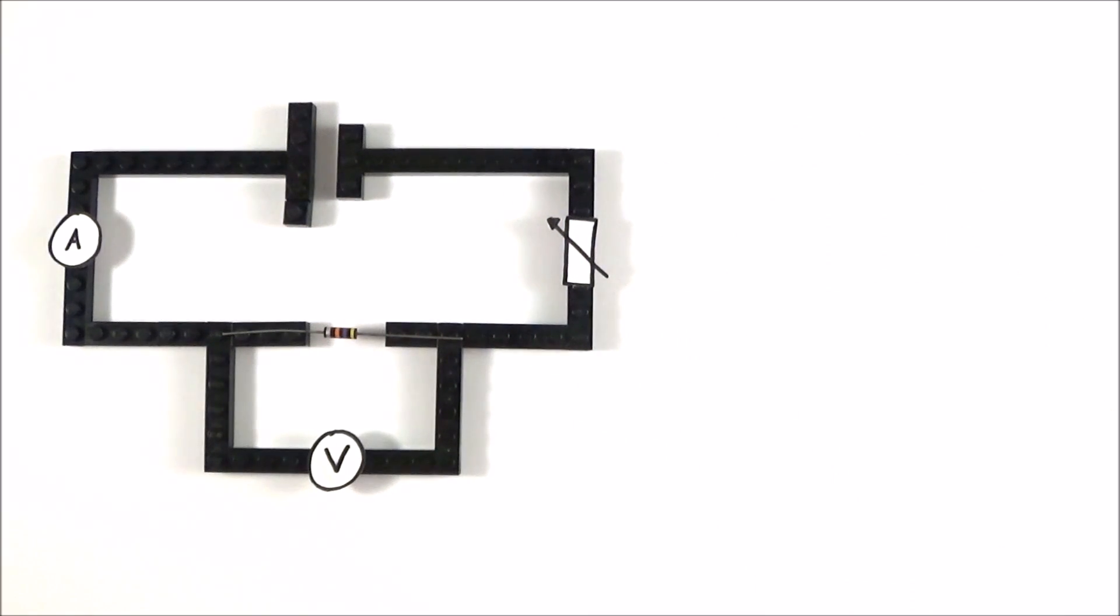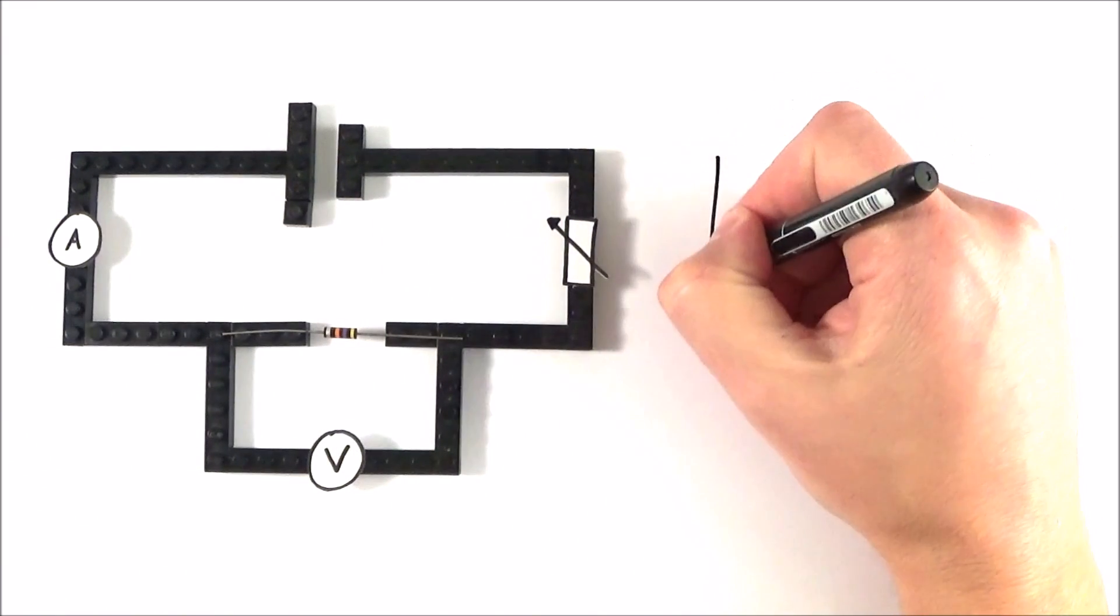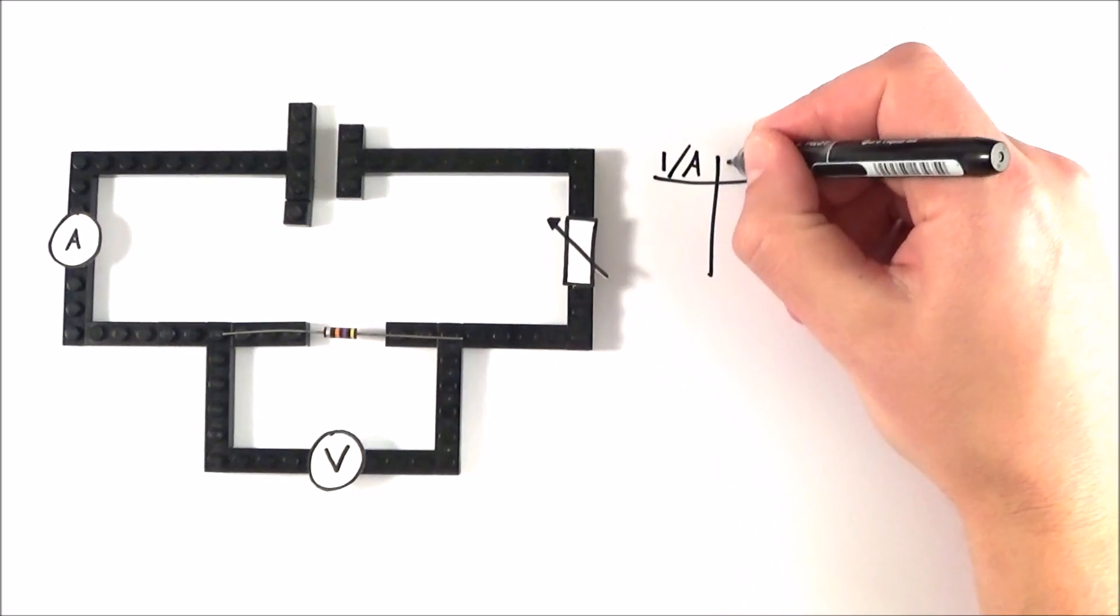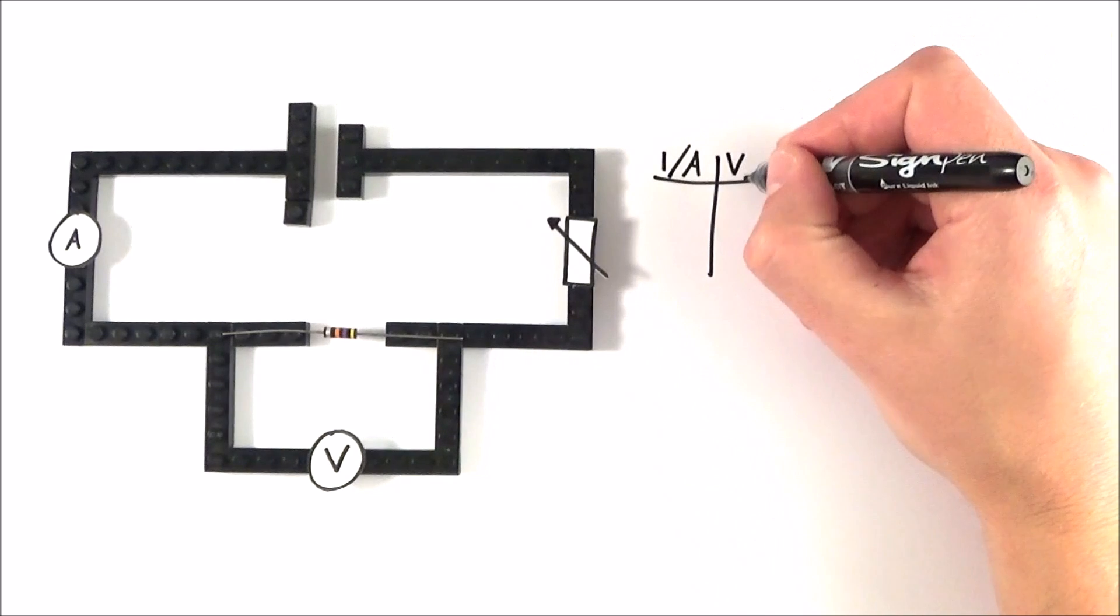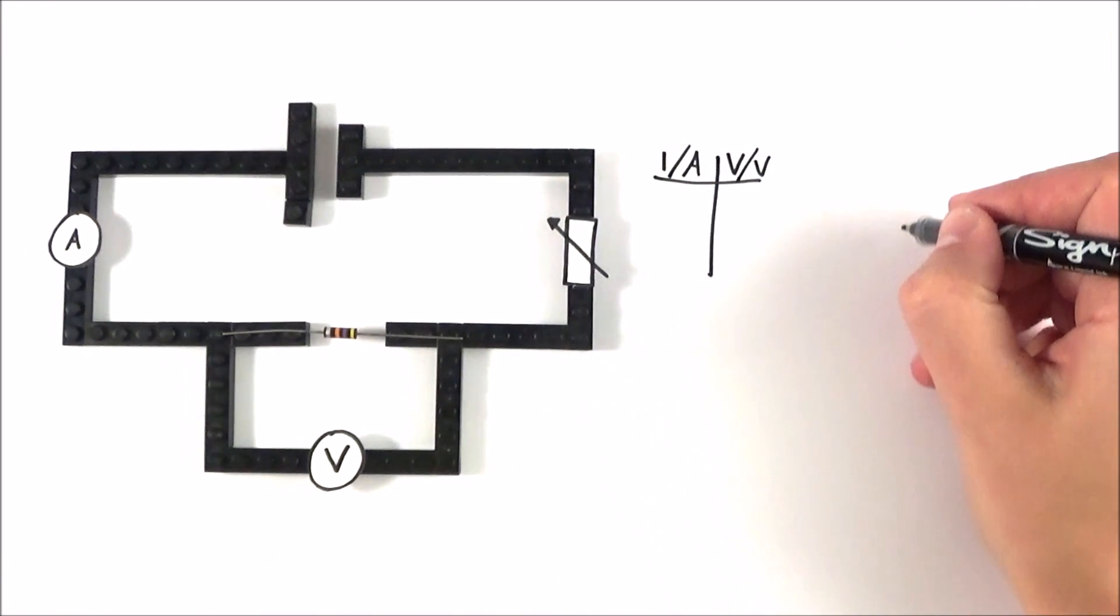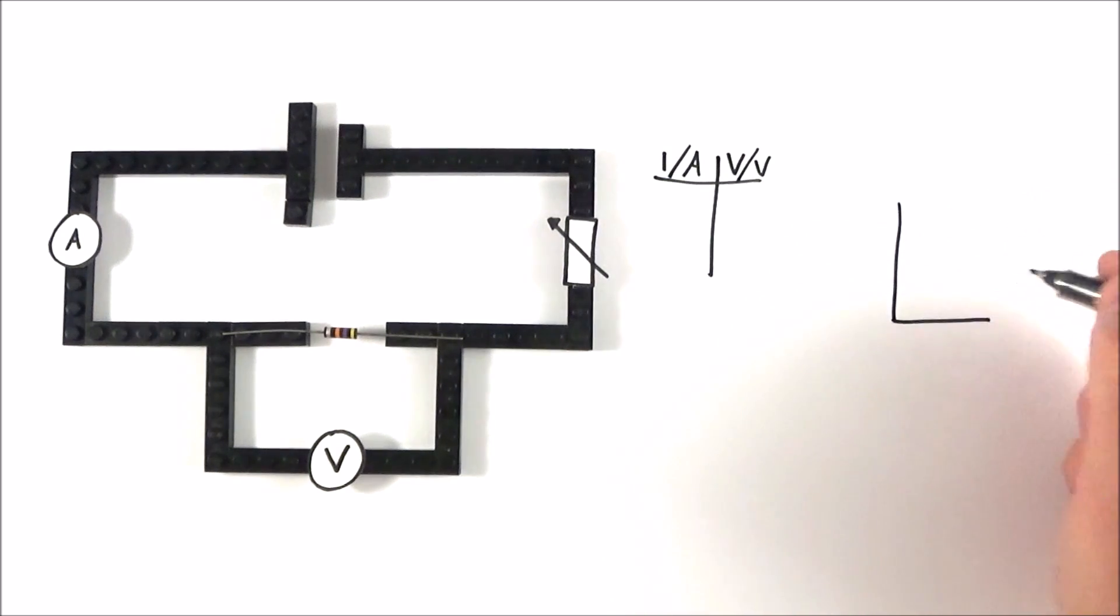So what we can now do is we can start to take some readings. What we can maybe do is we can maybe take readings for the current measured in amps and also the potential difference across that component measured in volts. If we then plotted this on a graph we'd get something that looks a bit like this.